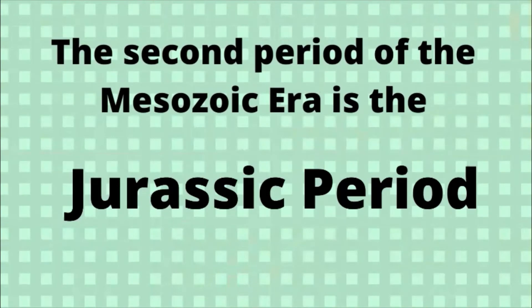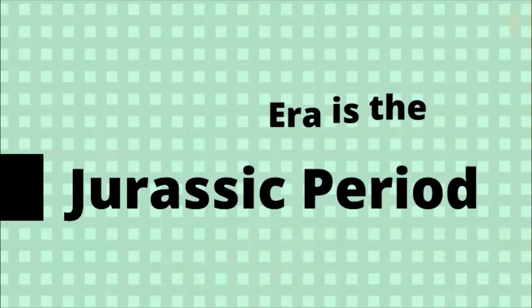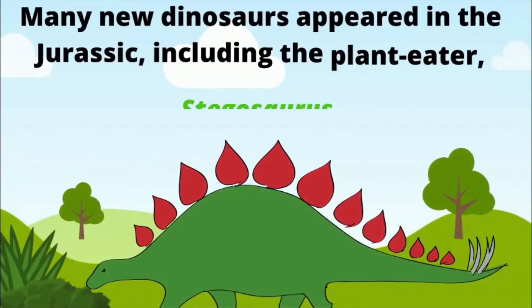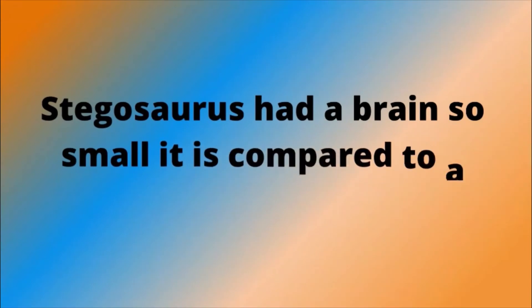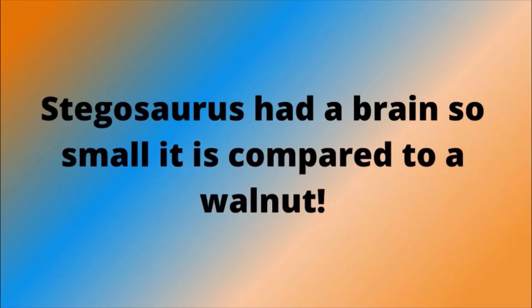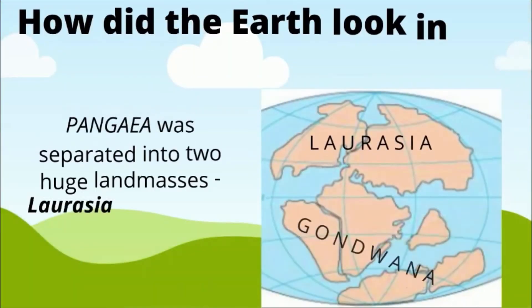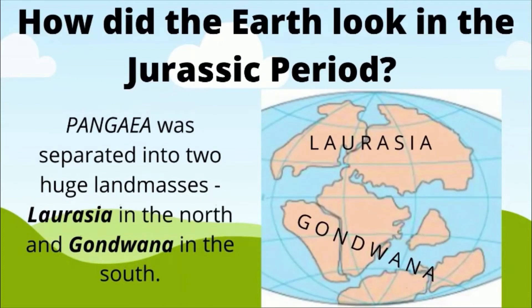The second period of the Mesozoic era is the Jurassic period. Many new dinosaurs appeared in the Jurassic, including the plant-eater Stegosaurus. Stegosaurus had a brain so small it is compared to a walnut. In the Jurassic period, Pangaea was separated into two huge landmasses: Eurasia in the north and Gondwana in the south.